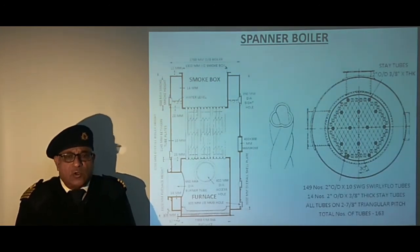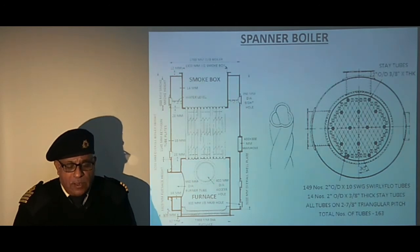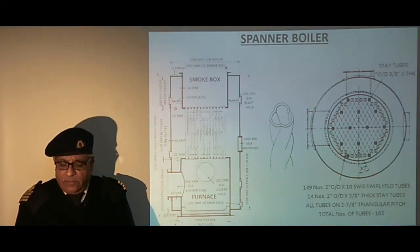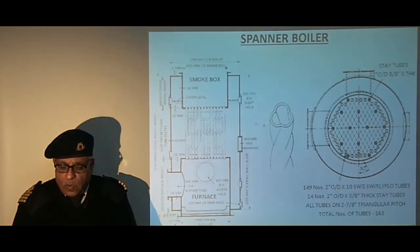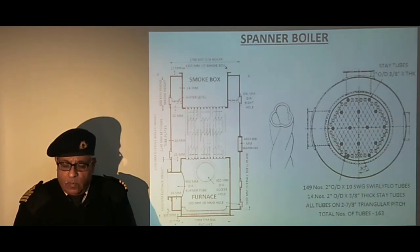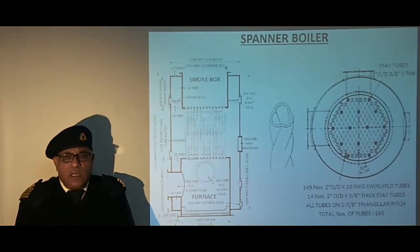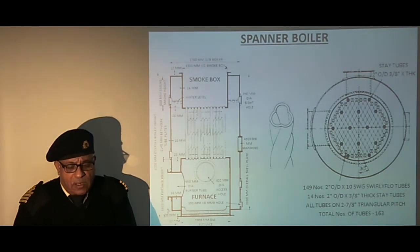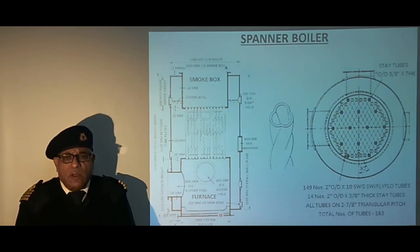Internal access is provided by means of a manhole for internal inspection. A number of sight holes are provided at other locations for inspection. In addition, six-inch diameter sight holes are provided at specific places for carrying out inspection. Fuel is burnt in the water-cooled furnace, and only the bottom of the furnace is covered by refractory material.